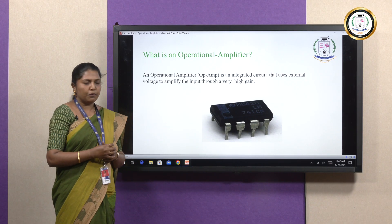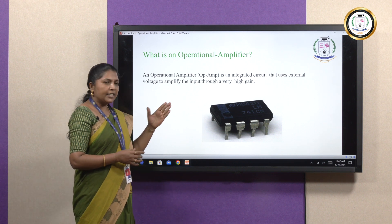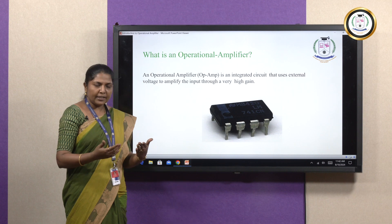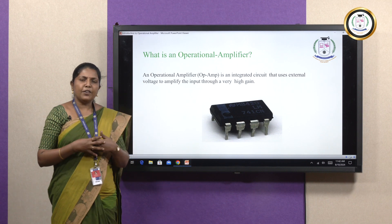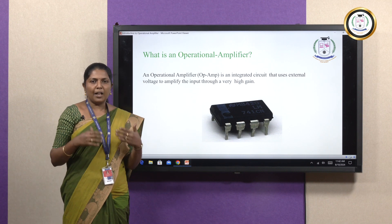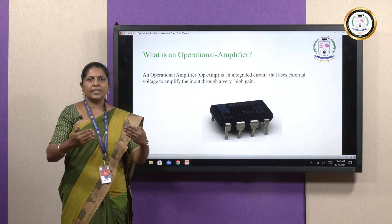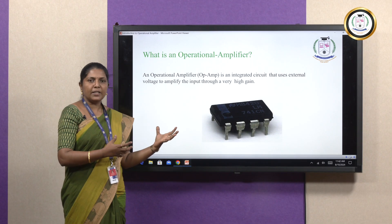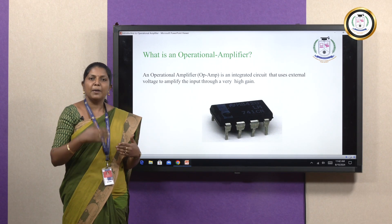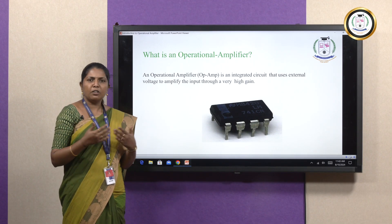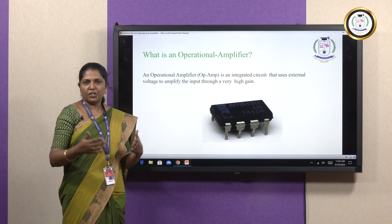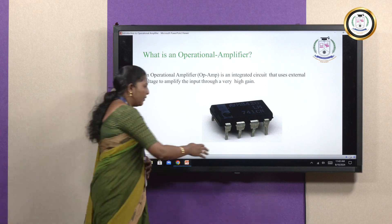We simply call the analog integrated circuit an operational amplifier. It comes in IC form — the IC number is IC 741. It is an integrated circuit that uses an external power supply or external voltage to amplify the signal with high gain power. An amplifier amplifies the signal or increases the strength of the signal. We call it an operational amplifier because in addition to amplification, it also performs mathematical operations such as addition, subtraction, integration, and differentiation.